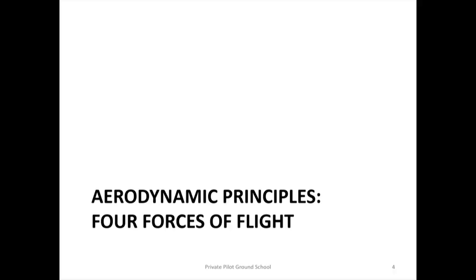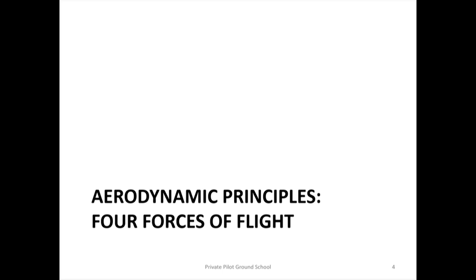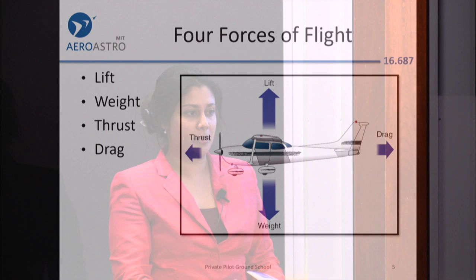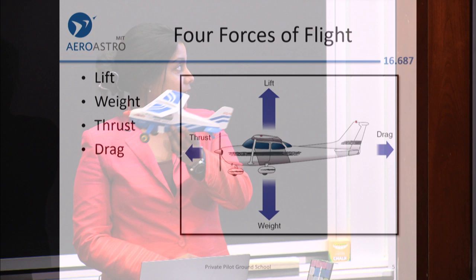The other thing we need to talk about are the main four forces on an airplane. The force going up is lift, and that force is opposed by the downward force of weight. When you're moving the airplane forward, that's thrust, and it is opposed by drag.